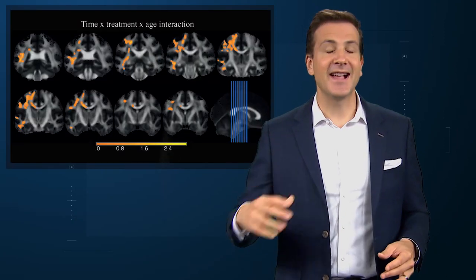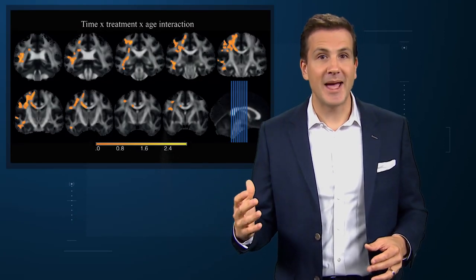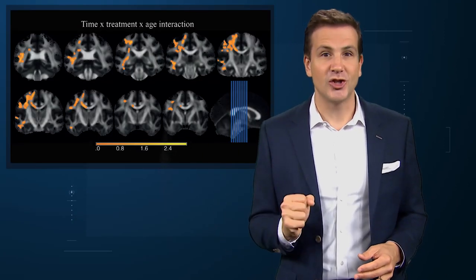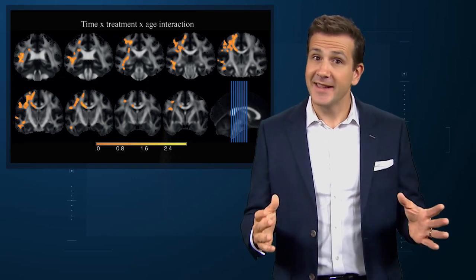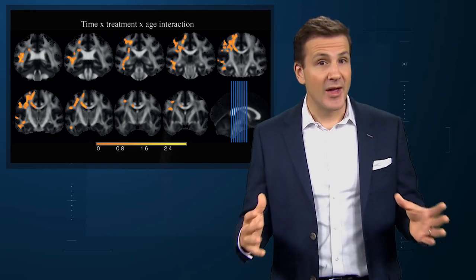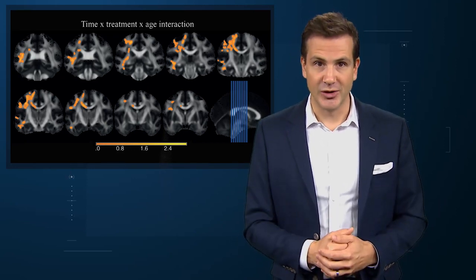You can see exactly where in the brain that change was most dramatic in this neat picture, highlighting the left superior longitudinal fasciculus and some other areas rich in crossing fibers.